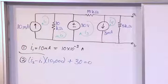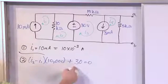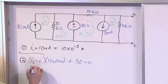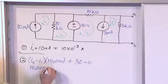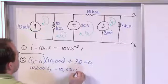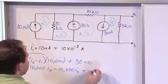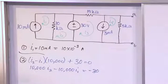All right, so let's go ahead and expand this out. So we have 10,000 I2 minus 10,000 I1, and we'll just move the 30 over to the other side, so that's going to be negative 30.